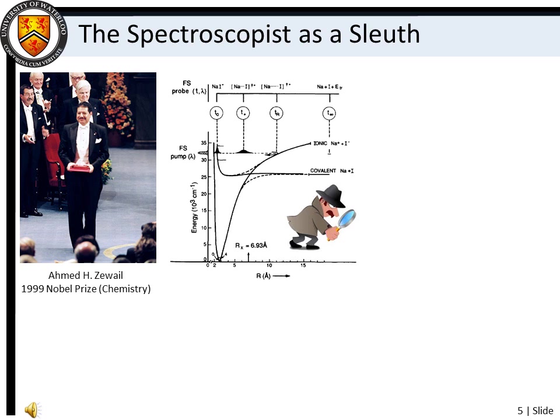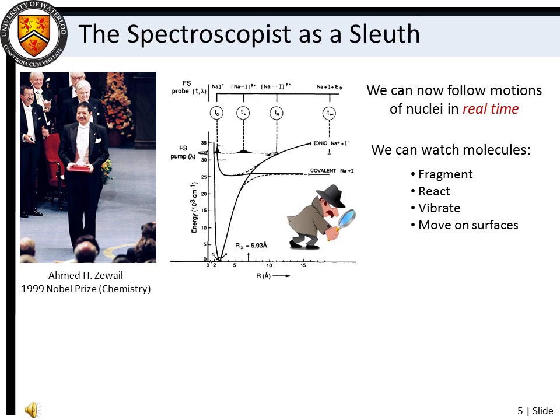Modern spectroscopic techniques are not only used to determine chemical composition. Using spectroscopic methods, we can cool matter to micro-kelvin temperatures, we can determine molecular structures, and we can observe the dynamic behavior of atoms and molecules in real time as they vibrate, move on surfaces, or react. Atomic movements in molecules occur on the timescale of femtoseconds to picoseconds. Thus, this spectroscopic subdiscipline is known as femtochemistry.